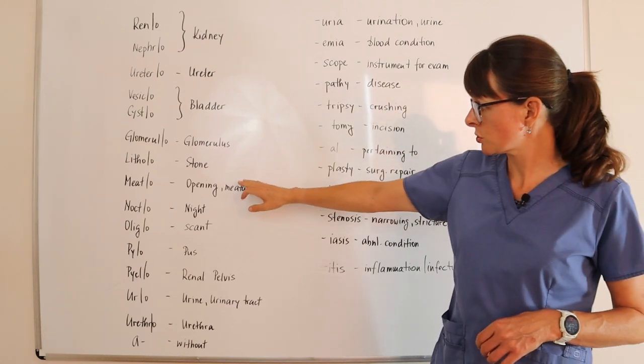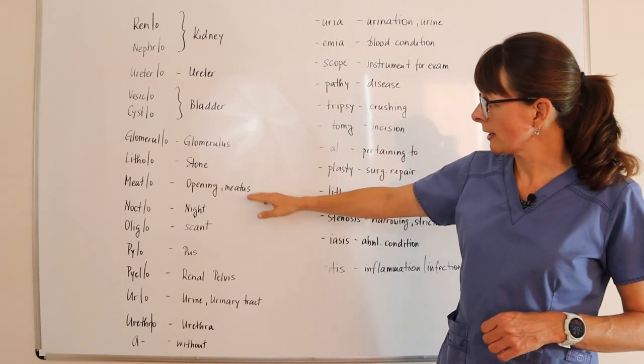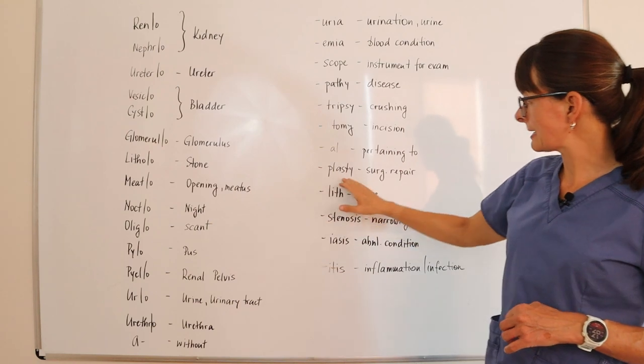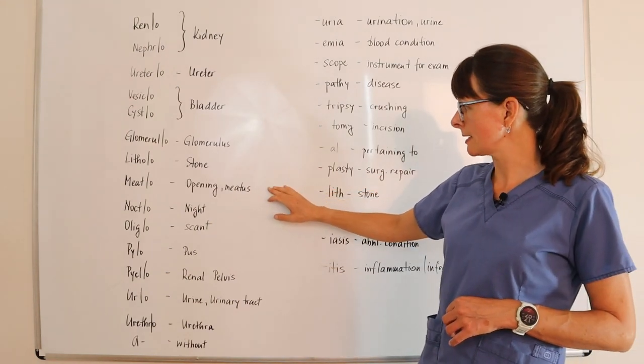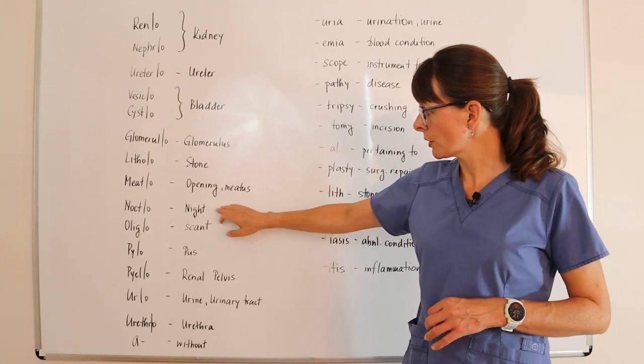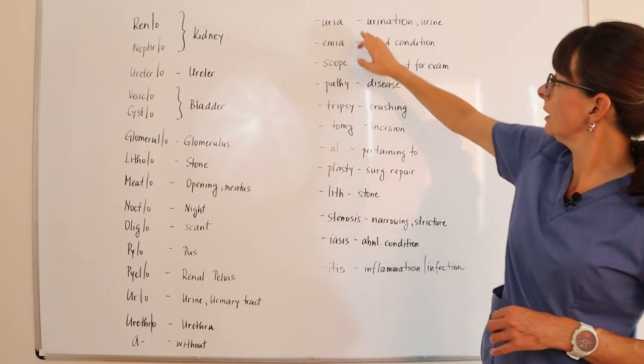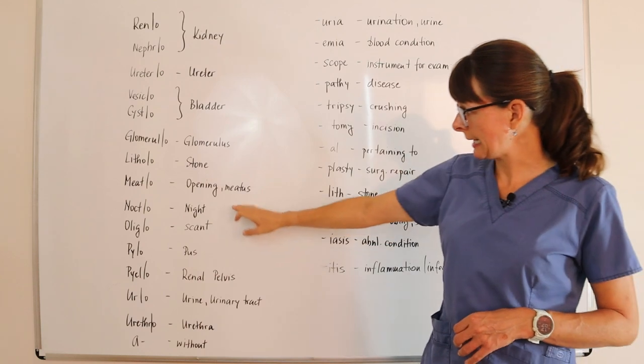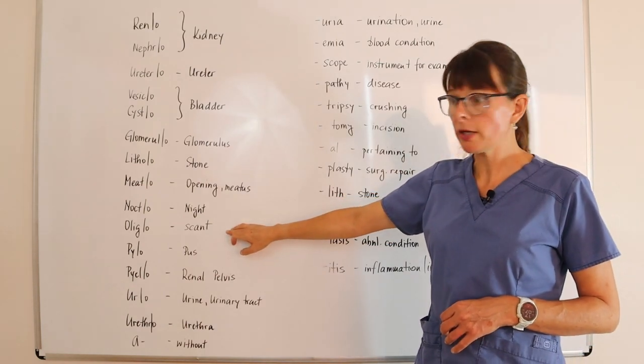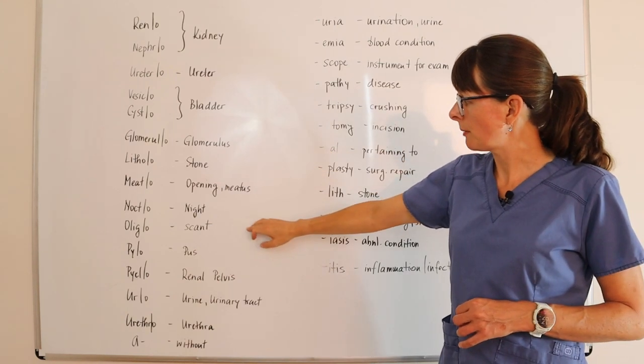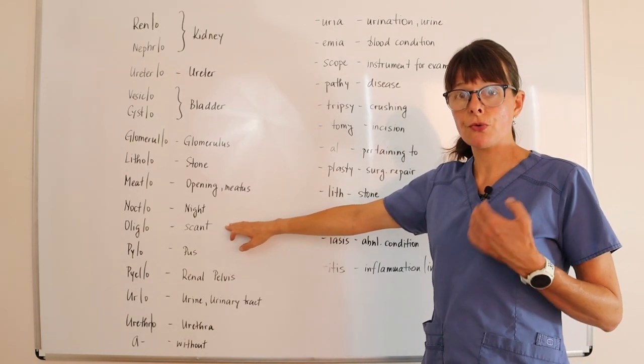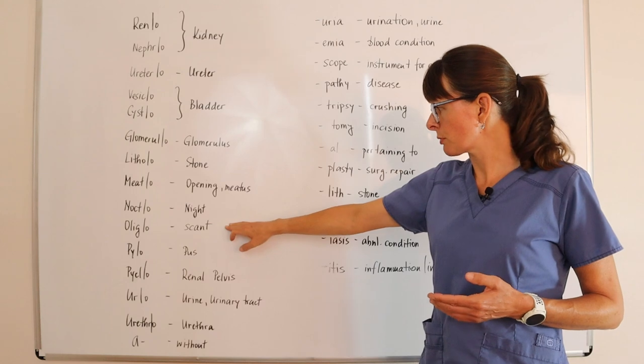Then we can have meatoplasty, for example, surgical repair of that opening or meatus. Nocto or nocturia: urination at night. Oligo or oliguria, meaning scant urine or not enough urine production.